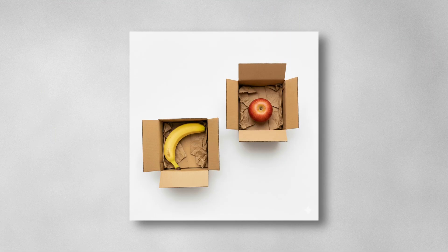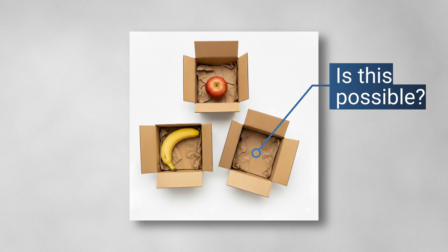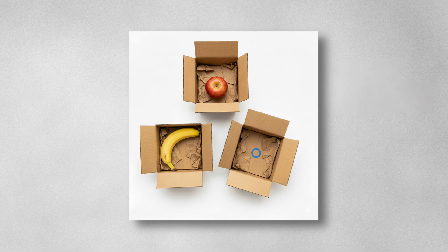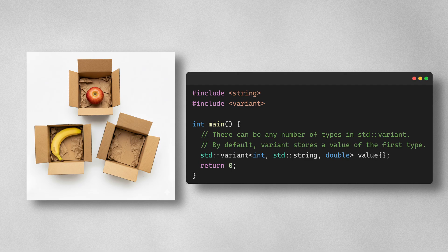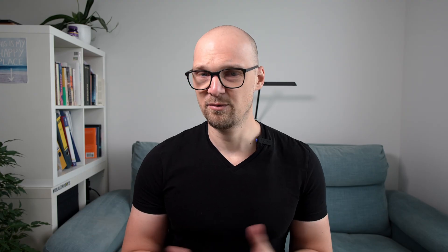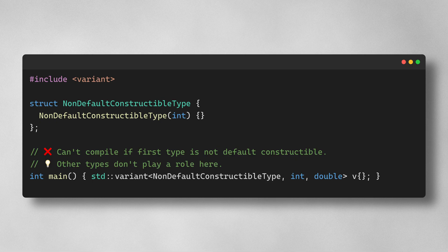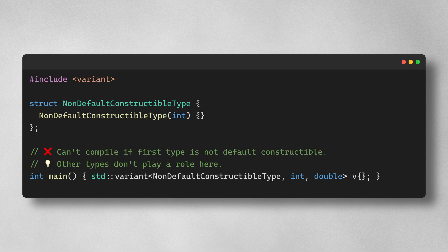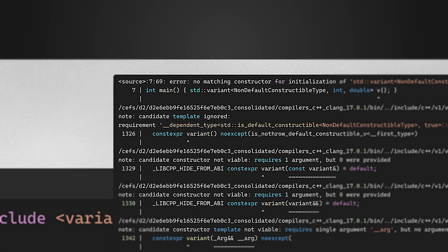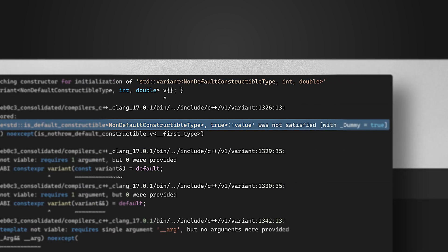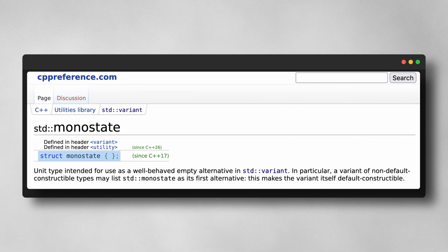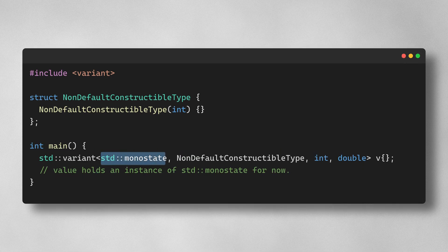A logical question pops up: can the box be empty? In other words, can we have an empty std::variant? By default, variants store a value of the first type, so creating an empty box would be problematic. But always creating a variable of the first type might not be desirable or even possible — imagine storing types that do not have a default constructor. To mitigate such situations, there is a type std::monostate: an empty type that is default constructable, which we can use as the first type in the list passed into std::variant if we want our variant to be in an empty state by default.